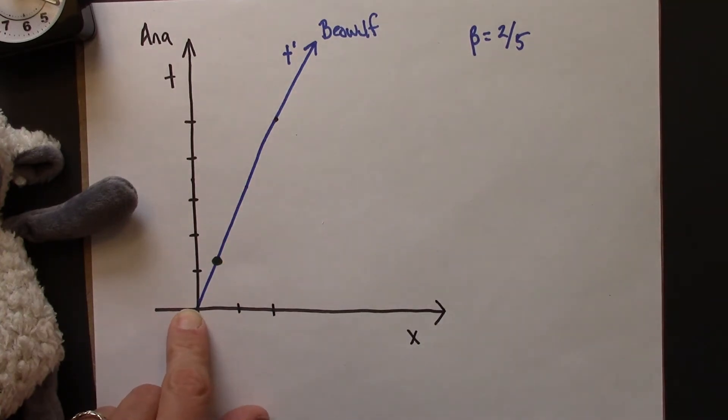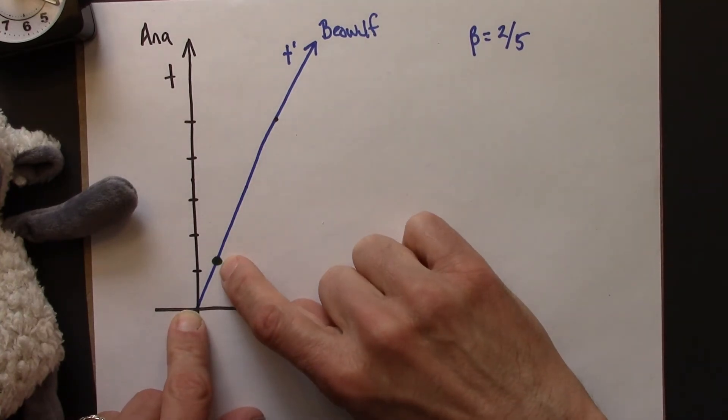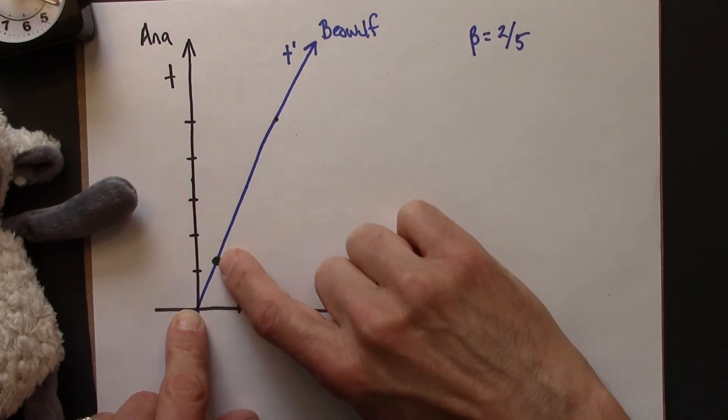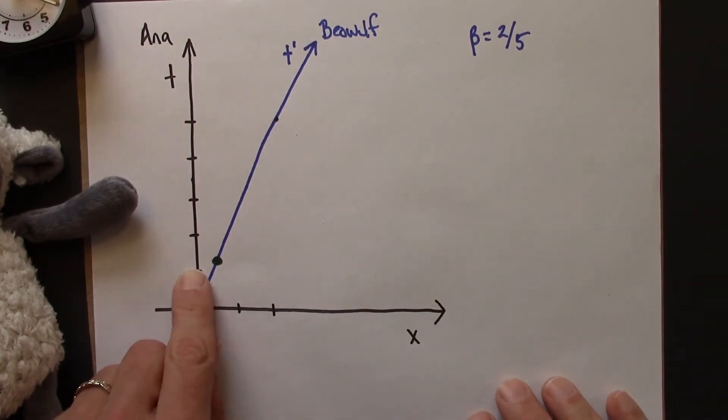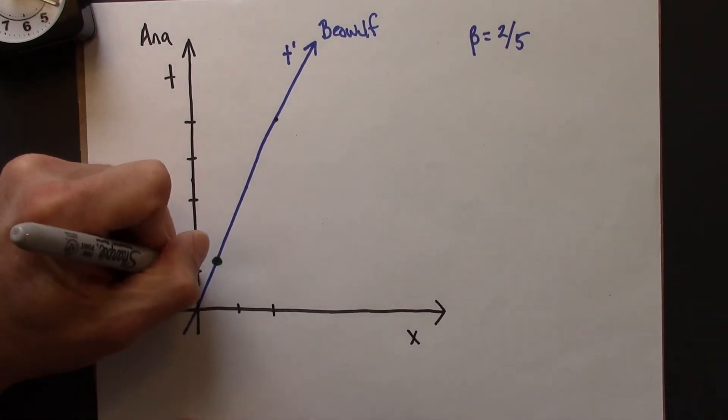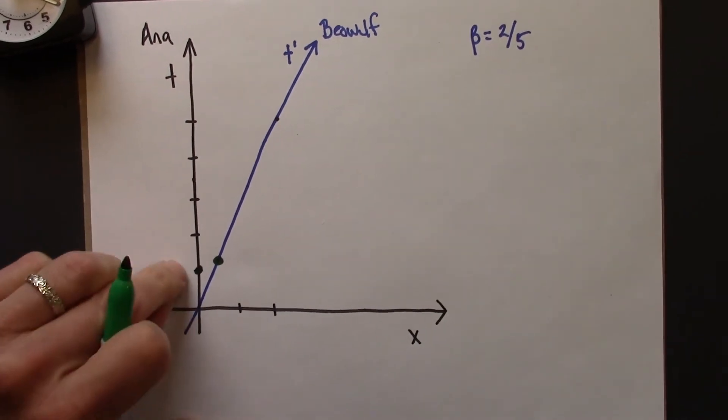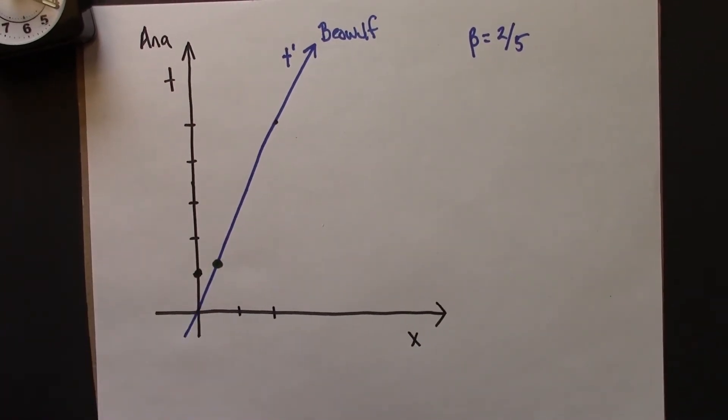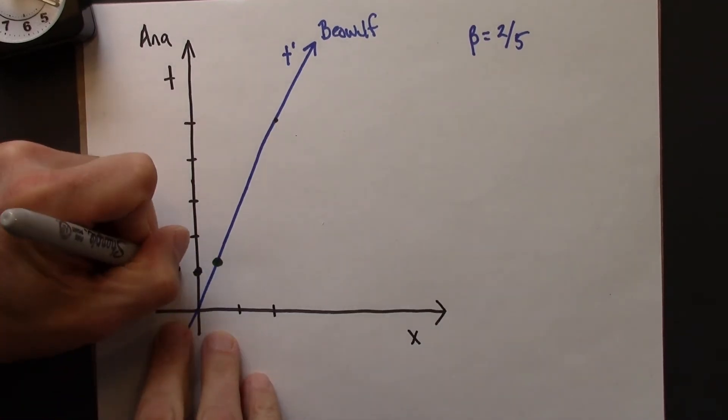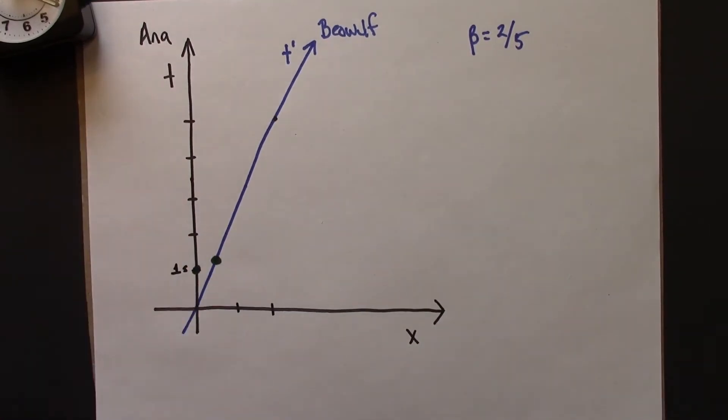So Ana's like, alright, so there's a space-time event that has a space-time interval of 1. Well, in my reference frame, I know that this event, which I guess I'll also draw in green, also has a space-time interval of 1. So the picture here is that this is 1 second, according to Ana. And for her, that's a clock that's at rest.